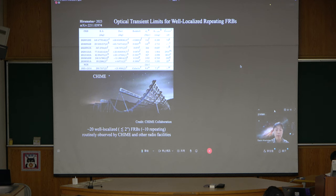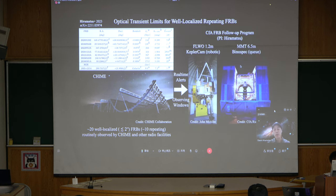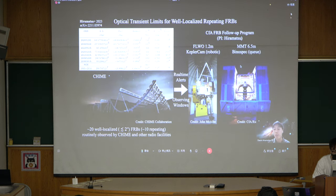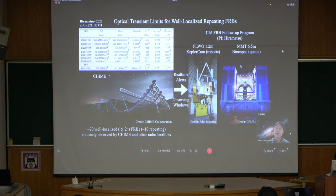Ten of which are repeating, and these are routinely observed by CHIME and other radio facilities. In case of CHIME, they distribute real-time alerts when they observe a burst from these repeating bursts, or if the FRB is in a particular phase, we can look at the FRB as CHIME observing, because the observing windows of CHIME is also public.